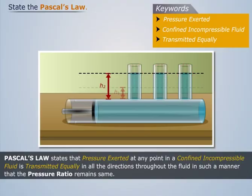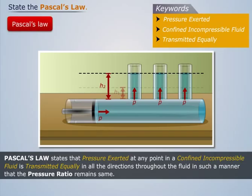Thus, we can say that when pressure is increased in the horizontal cylinder, it gets distributed equally in all three vertical tubes. This states the Pascal's Law.